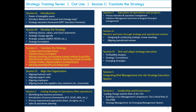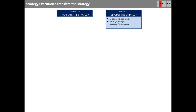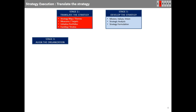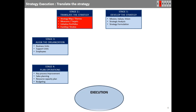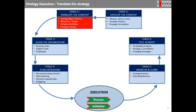Let us take a deep dive into stage two of Translate the Strategy. We shall discuss strategy maps, scorecards, and strategic themes, and look at the six stages of the Execution Premium methodology. We completed stage one where the strategy is developed. Stage two discusses translating the strategy — we talk about strategy map, theme, objectives, and measures in this session.